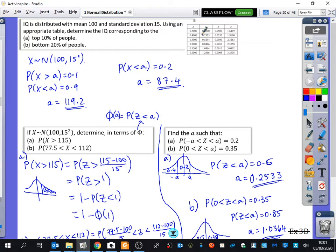First one, though, we wanted the top 10% of people to be brighter than a particular IQ or more clever than a particular IQ. And when you then use the inverse function on the calculator, you get 119.2 because it had to be 90% because it was less than or equal to.